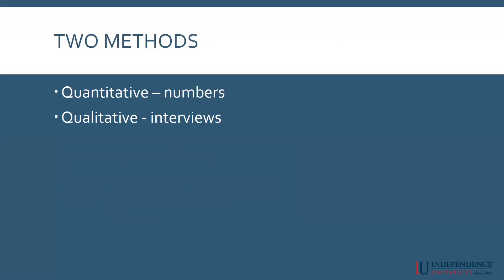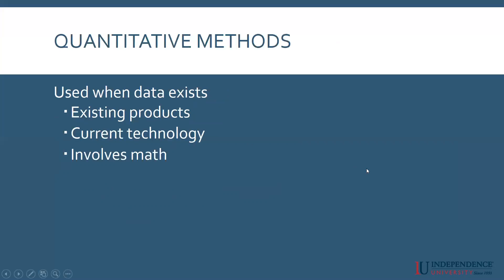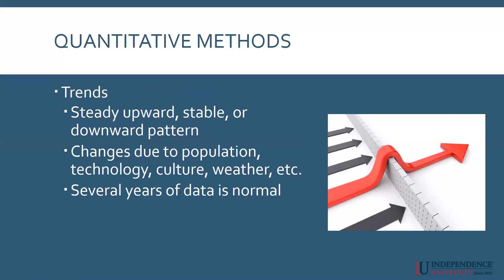So, methods. There are two general methods that people use to forecast, though there are dozens available — you can easily search Google, Bing, or YouTube to find them. The most common ones are what I'm going to talk about here. Quantitative methods have to do with numbers. You would choose a quantitative method when you have data — for instance, if you've been in business for a while. There are facts and figures you can use, it involves math, and you need current technology to do this.